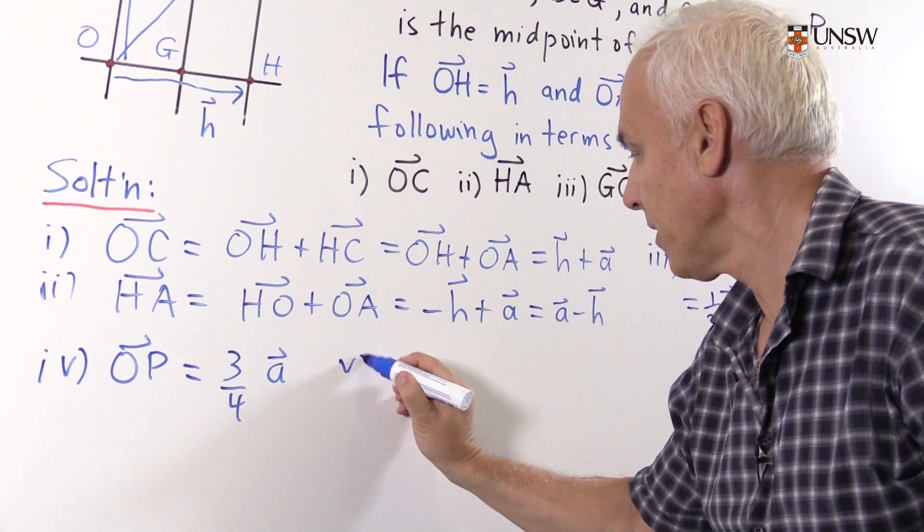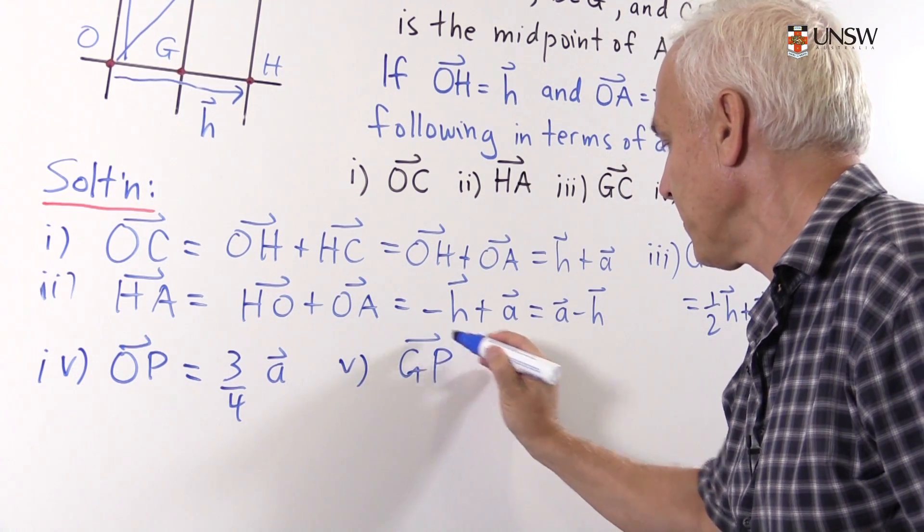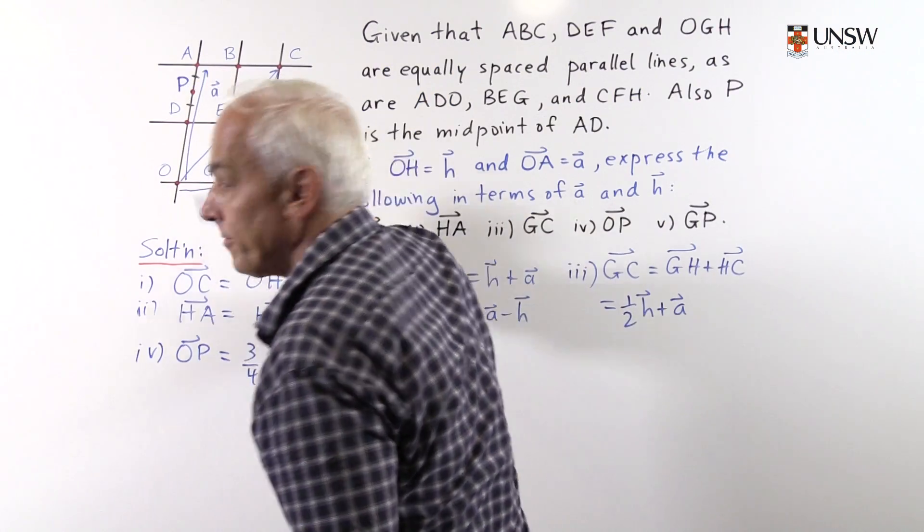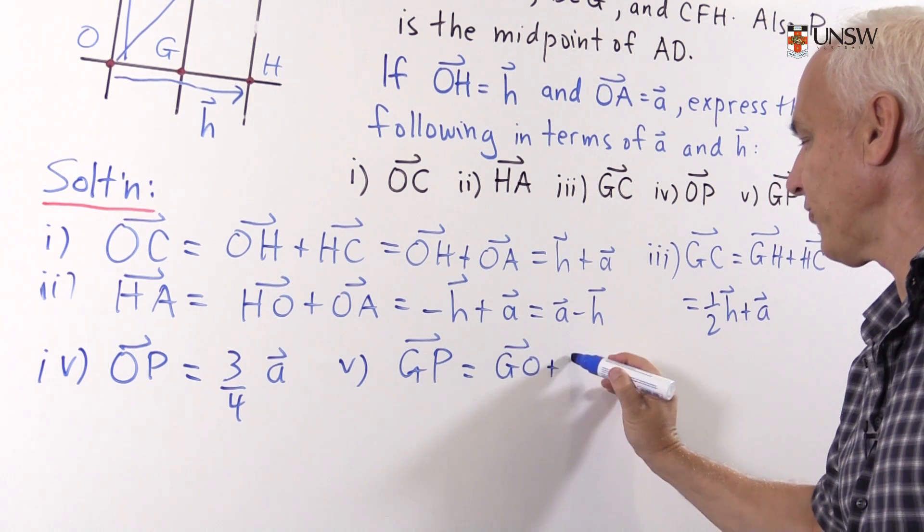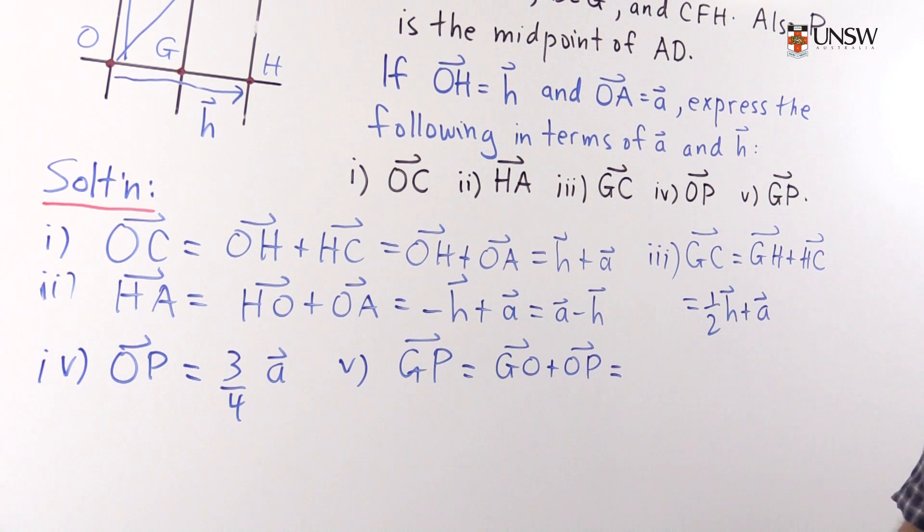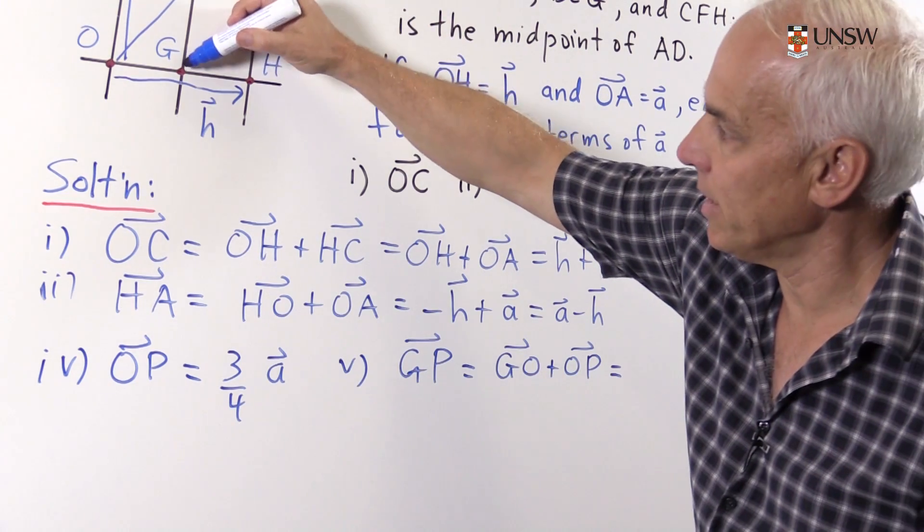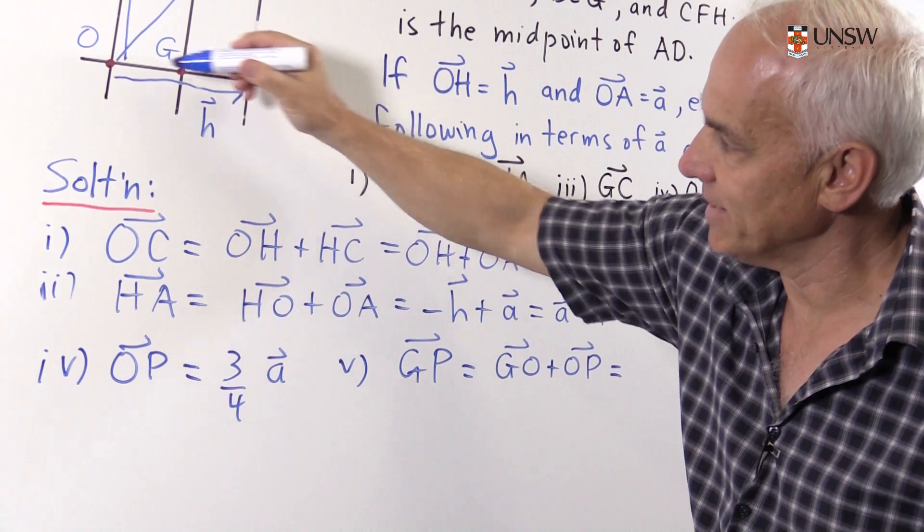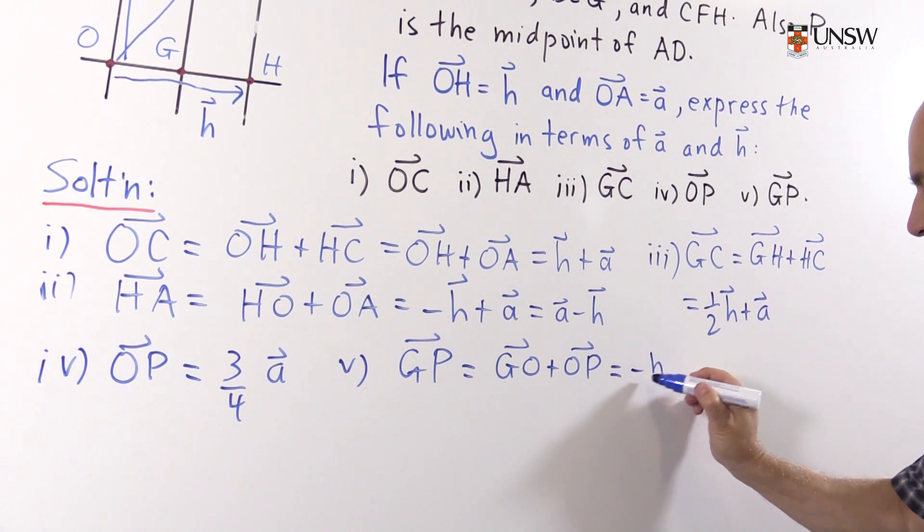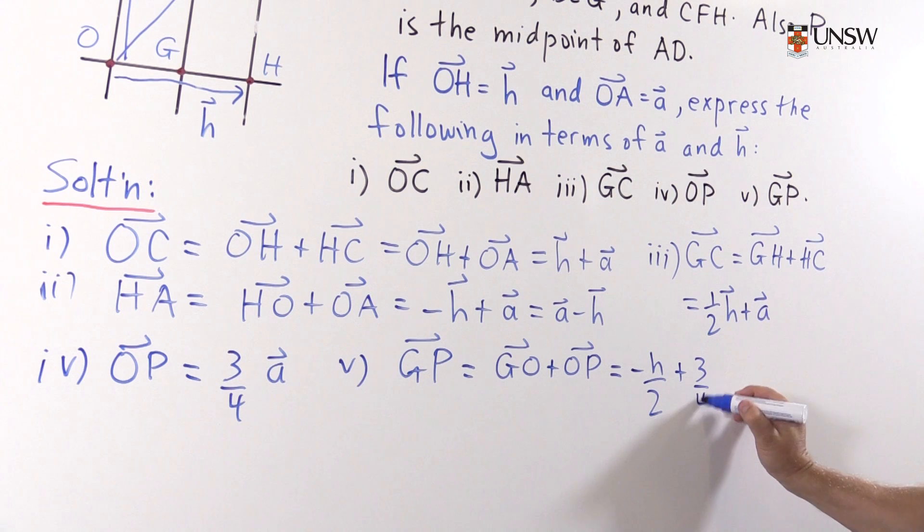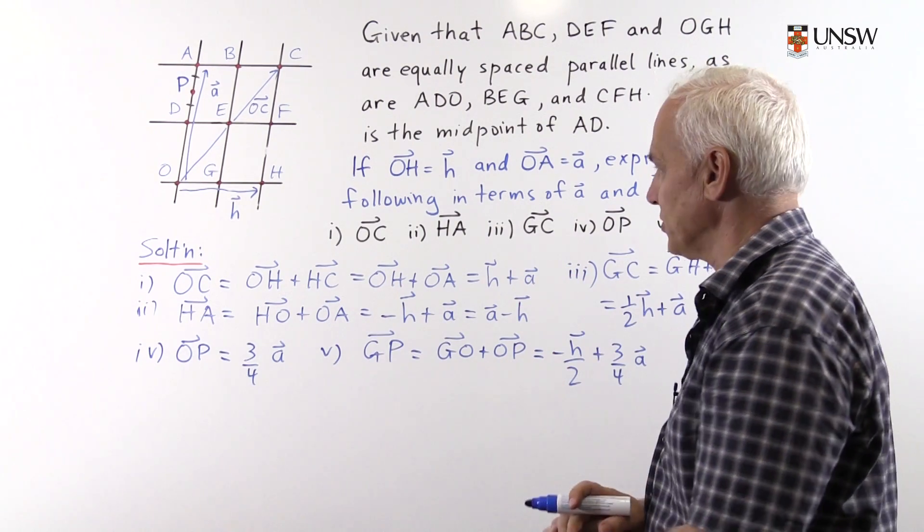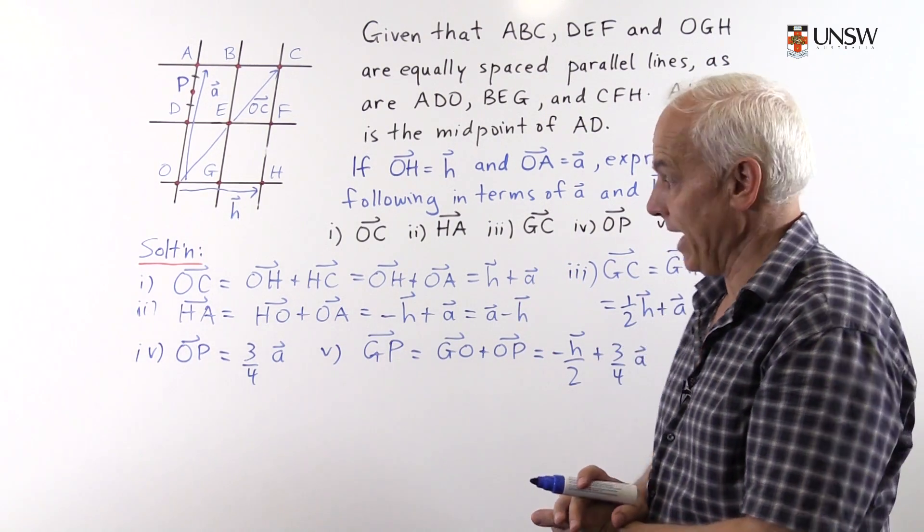And finally, GP, the vector from here to here. Well, we can write that as GO plus OP. OP we have already established in the previous one. What about GO going from here to here? Well, that's again the same direction as H, but only half as far. So that's minus H over 2. And OP we've said is three quarters of A. I should put vectors on all of those. So we've expressed these various vectors in terms of these particular vectors A and H.